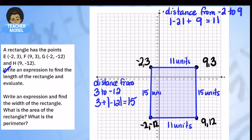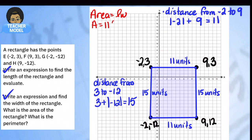We've found the width and the length. Now let's calculate the area. Area equals length times width, so that's 11 times 15. I think of it as ten times fifteen is one hundred fifty, plus one times fifteen is fifteen — total is 165 square units. You could actually count all 165 little squares inside the rectangle to verify.